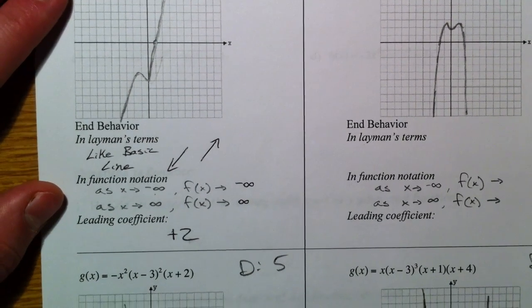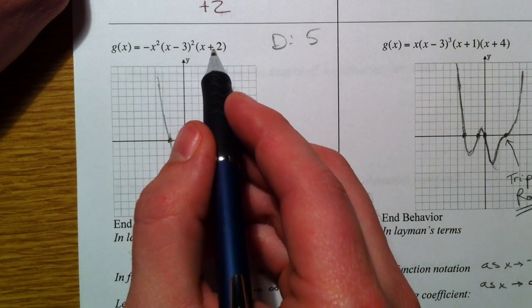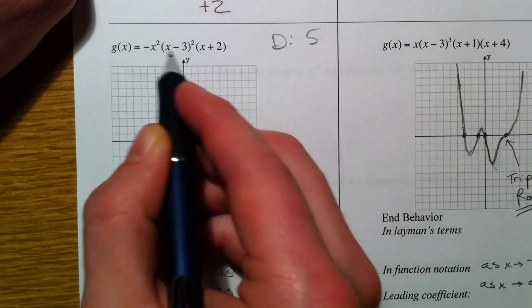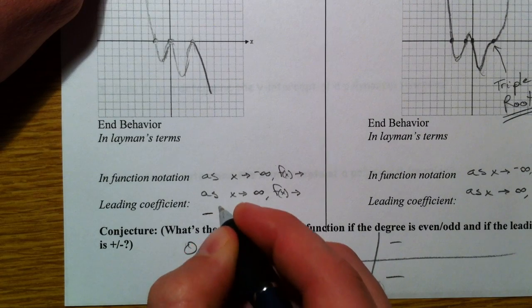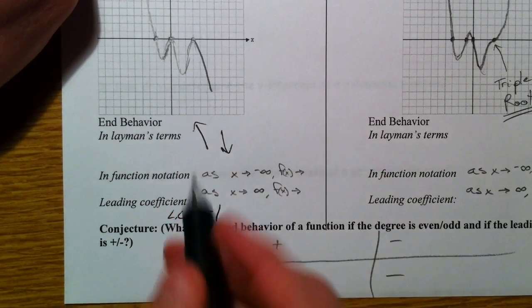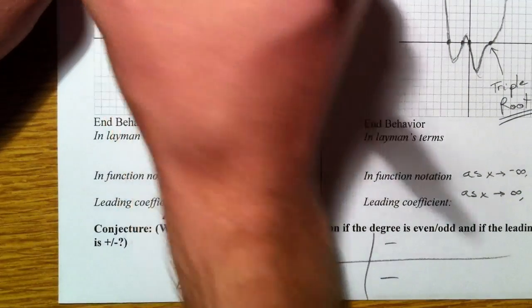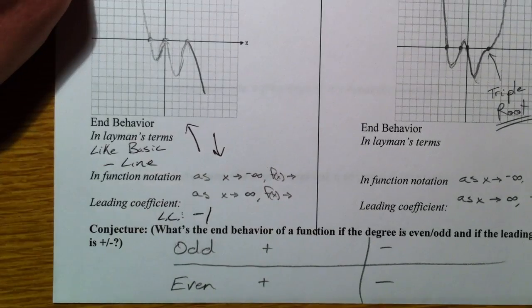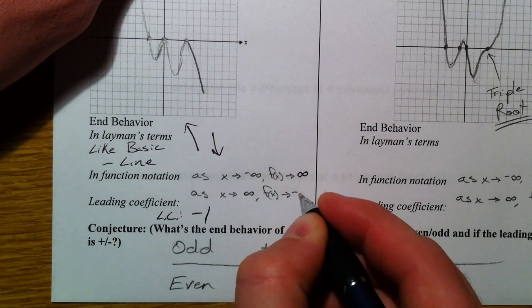In factored form — x squared times another x squared times another x — that's degree 5, which is odd, and it has a negative out front: negative leading coefficient. So in layman's terms, it's going up to the left and down to the right, just like a negative line. As x goes to the left, it goes to positive infinity. And as x goes to the right, it goes down to negative infinity.